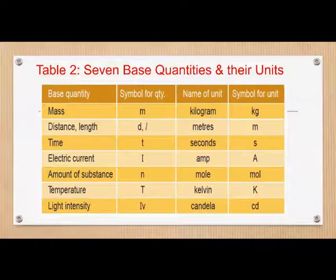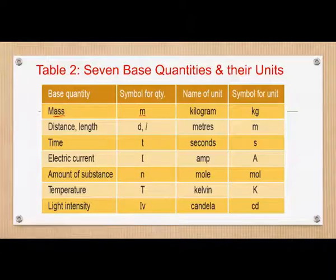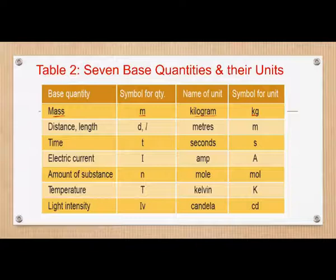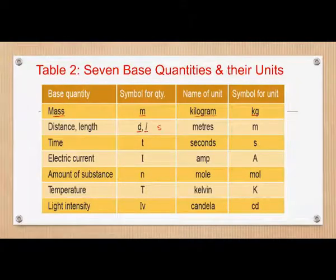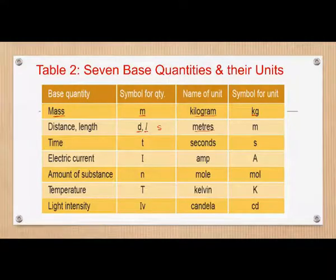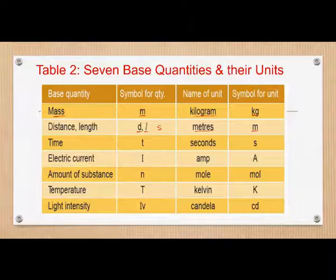In the following table, we have the seven base quantities. For mass, the symbol is M and the base unit is kilogram, symbol KG. For length, distance, depth, or height, we use D for distance, L for length, and small s for displacement. The unit of length is meters, symbol M. We must distinguish: this M is the symbol for mass and that M is the symbol for meters. Time is T, seconds, symbol S.